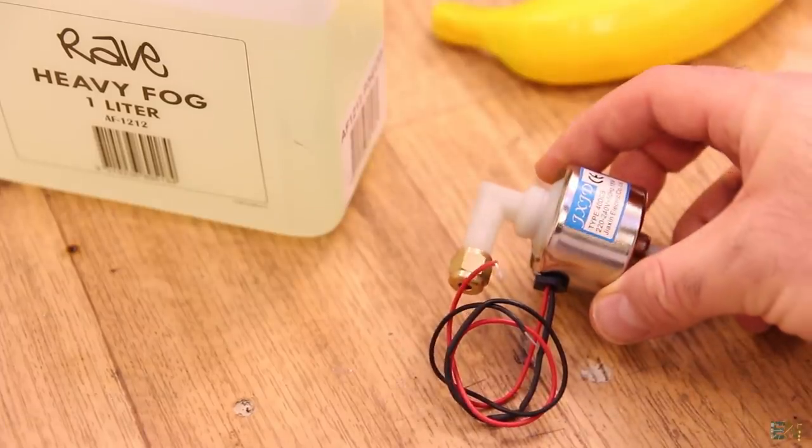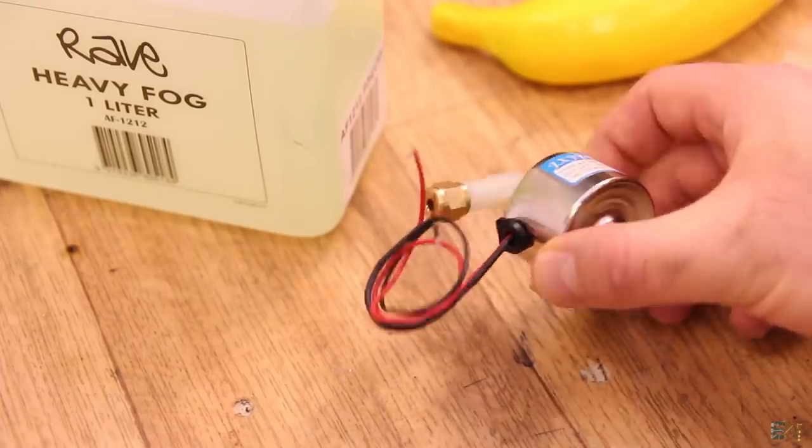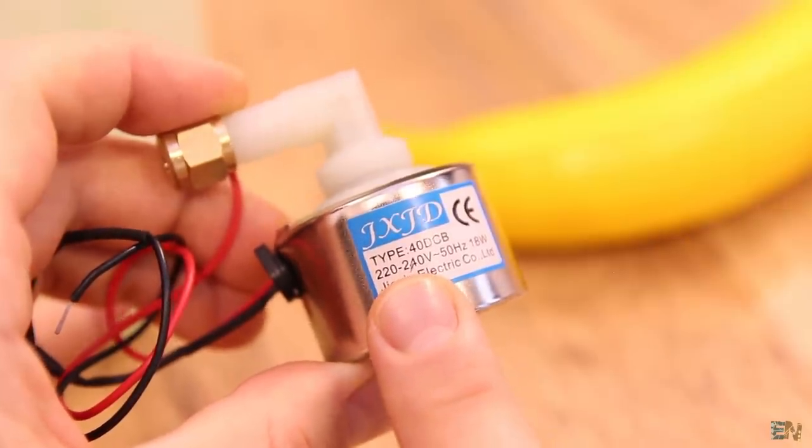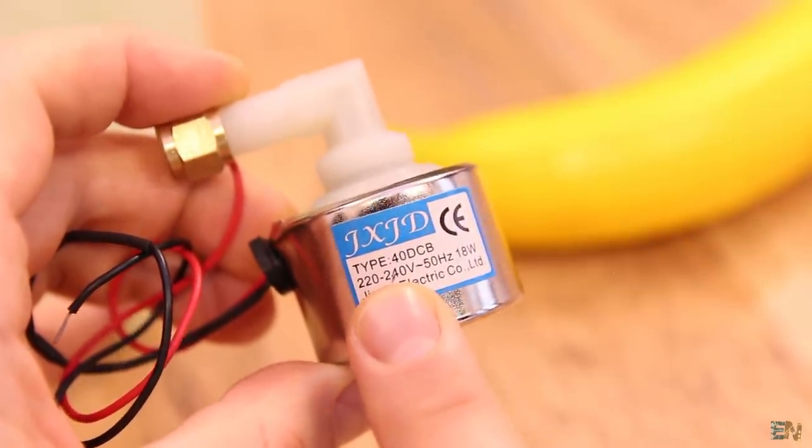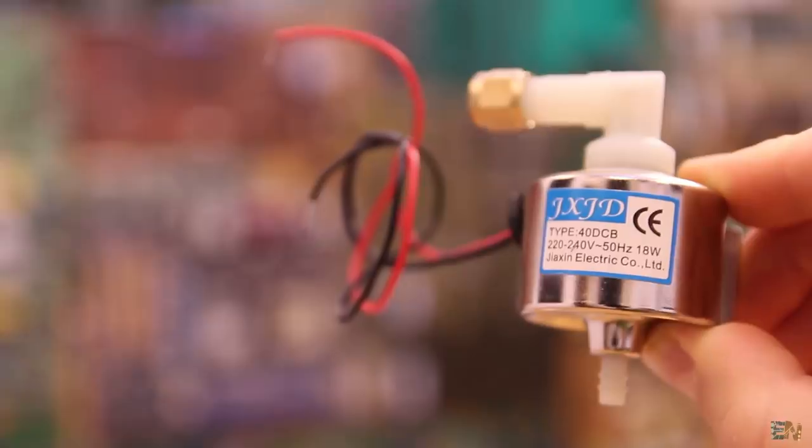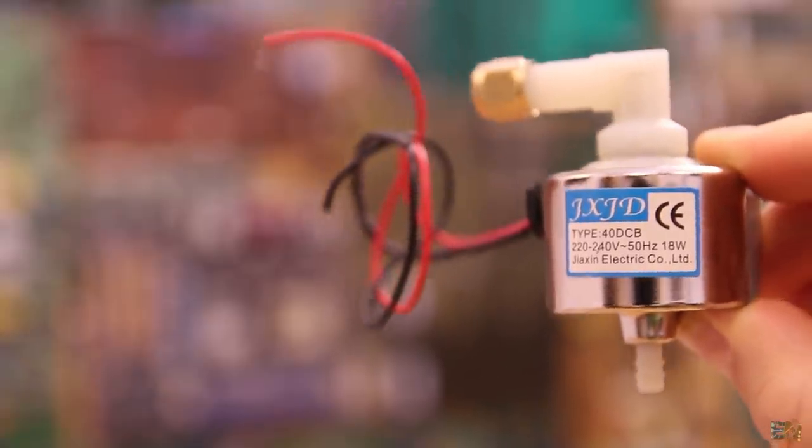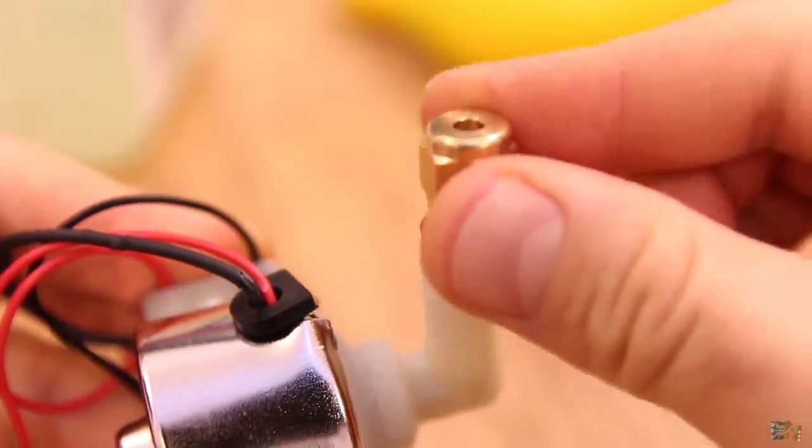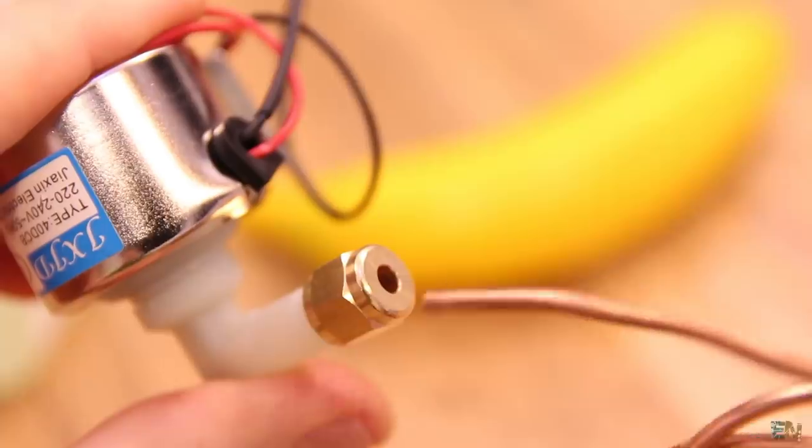To push the liquid out, we need a pump. Since the entire system will work with power directly from my home outlet, I've ordered a 220V electric pump like this one. If you live in US, please make sure that you buy all the parts for this project for 120V. This pump already has a connector for the copper tube that we will use.